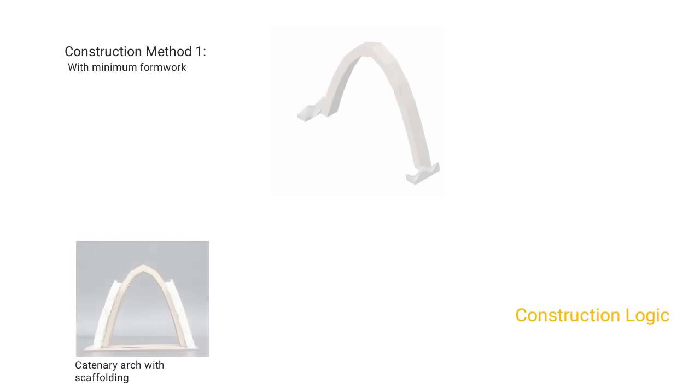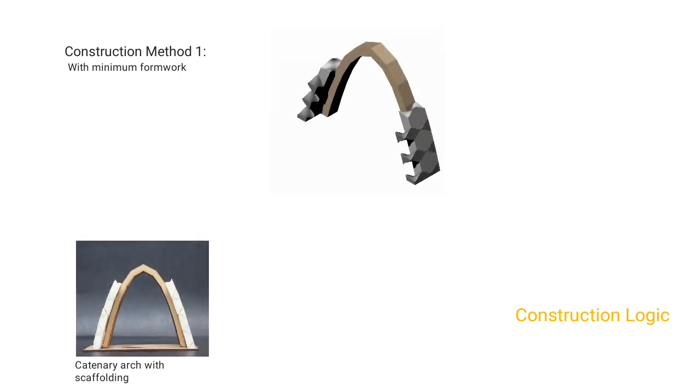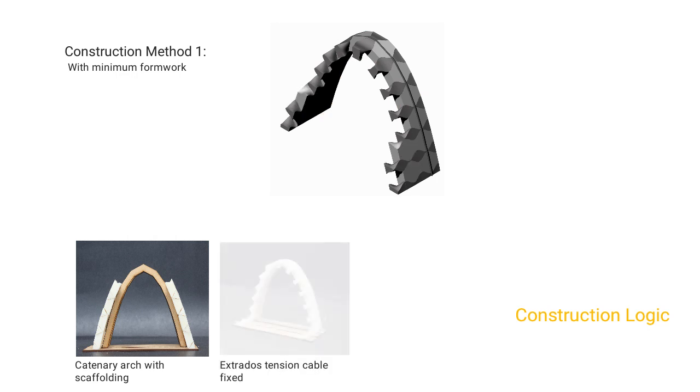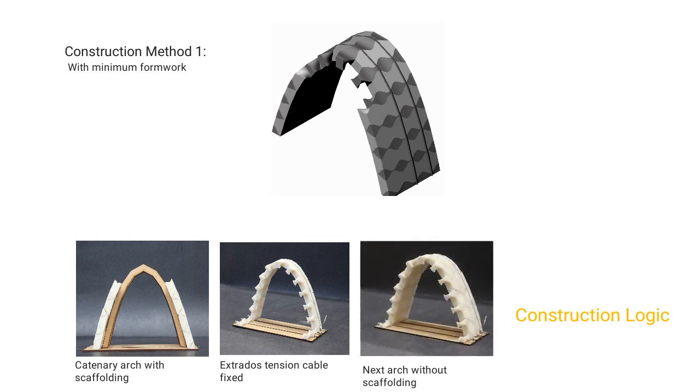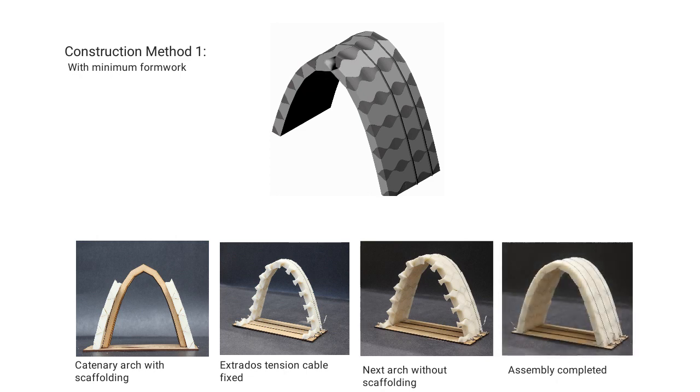Two methods of construction were visualized. One with minimum formwork and the other without formwork. Construction method one: With this logic, scaffolding is required only to assemble the first catenary arch in its position. This is because it is assembled by staggering of modules which create a pocket for the next block and ensures interlocking. The assembly is then kinematically constrained with the tension cable fixed at its base. This scaffolding can then be removed and the next rows of arches can be assembled without scaffolding. Following rows of assembly can be repeated in the same sequence as first one without scaffolding.